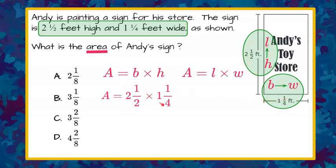So we have 2 1⁄2 and 1 1⁄4, and the formula says to multiply those two values together. To do that, we have to rewrite these mixed numbers as improper fractions.